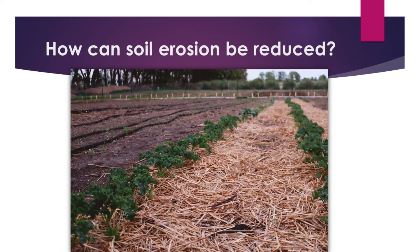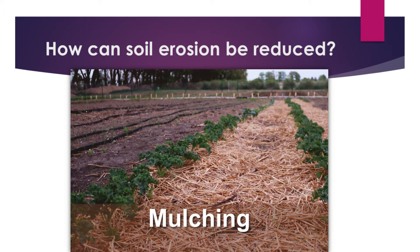A third method is practiced heavily in Jamaica, especially in areas of Saint Elizabeth. That method is called mulching. With mulching, you're basically using dried or decomposed material — leaves and other plants — to cover the soil. Mulching, apart from preventing soil erosion, also helps to retain moisture in the soil.